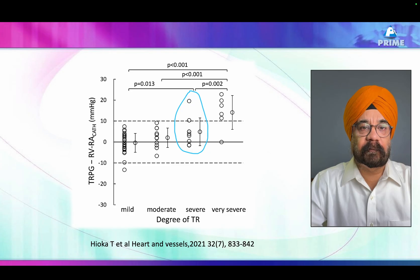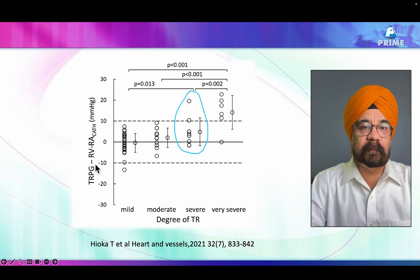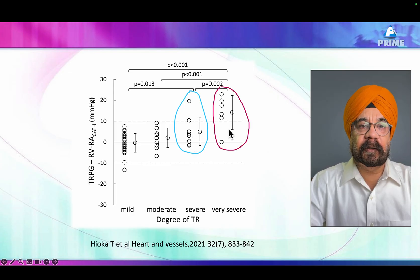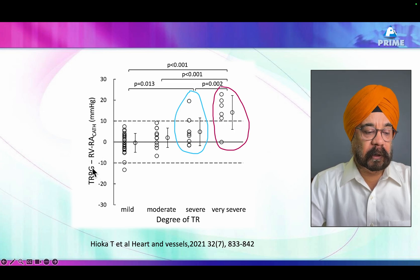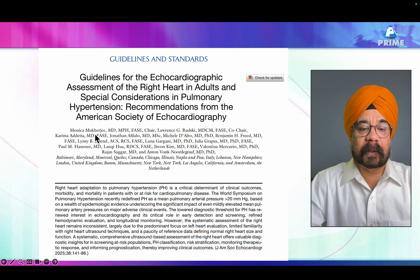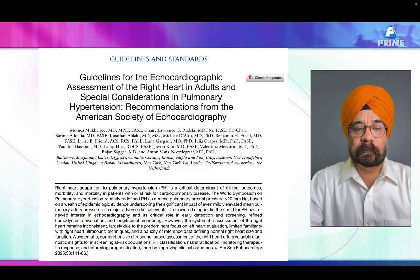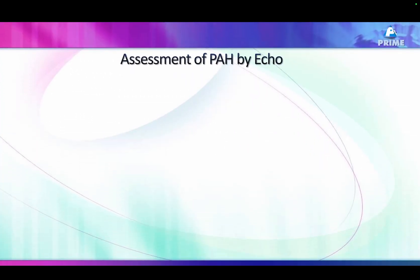Let's compare the gradient between the RV and RA — the difference in gradient between the right atrium and right ventricle, whether measured by catheterization or by echo, shows a huge discrepancy. This discrepancy becomes even more important when TR is severe. The difference between what we measure on echo and what we get on cath is substantial, and this was reiterated by the 2016 guidelines and reconfirmed in the 2025 guidelines on PA pressure.